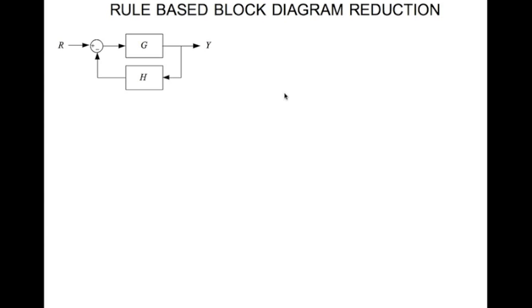This pattern is the classical canonical feedback with g in the forward direction and h in the feedback direction. This can be reduced to a single block which is equal to g divided by 1 plus gh. That's a transfer function.